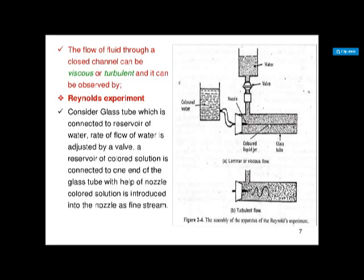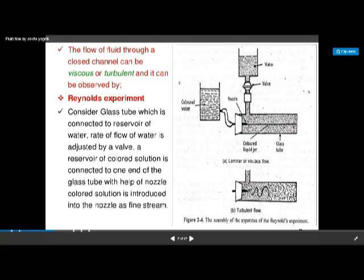Reynolds then observed that in the region of high flow rate, when the liquid flows at a very high flow rate, the dye solution becomes haphazard — all layers get mixed and the colored solution mixes completely. Here, the pressure drop is directly proportional to the flow rate in all directions. He named this region as the turbulent region — turbulent flow.